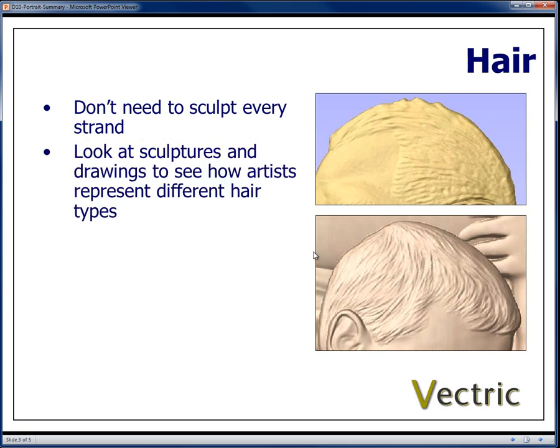A good way to see how you might model hair on a portrait is to look at sculptures, look at drawings, and see how artists represent different hair types — whether it's as an illustration or just more generally trying to give the effect of a certain hair without having to model all the strands.